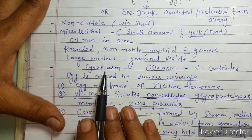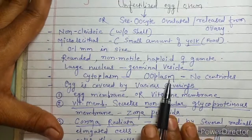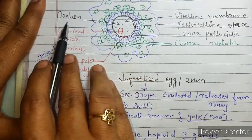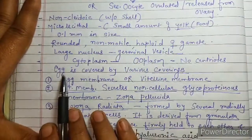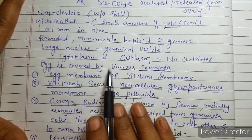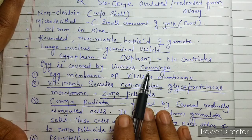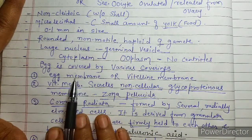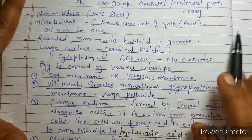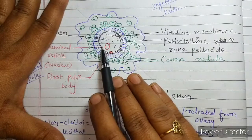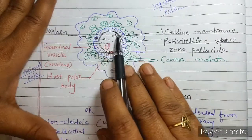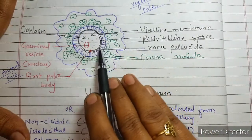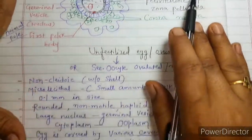The cytoplasm of the egg is called ooplasm. This egg or ovum is covered by various coverings. The first covering is the egg membrane, which is also known as the vitelline membrane.